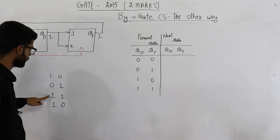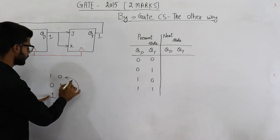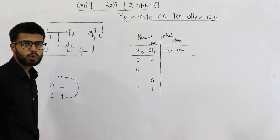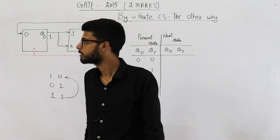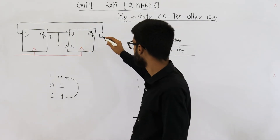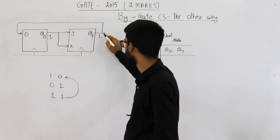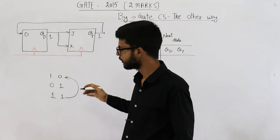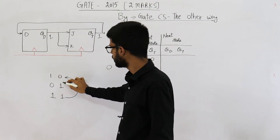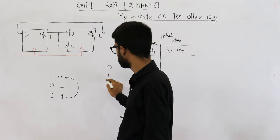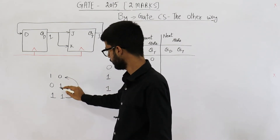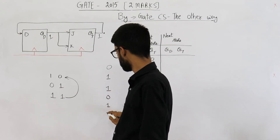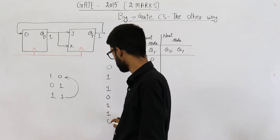So the output sequence so far is: 0, 1, 1. Now both outputs are 1. Since QD=1, T=1, meaning toggle — QT goes from 1 to 0. And QD takes the value of QT which was 1, so QD shifts to 1. Then the sequence comes back: 1, 0. So the pattern is 0, 1, 1, 0, 1, 1, 0 and so on.